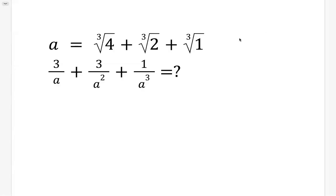Okay, let's see this question. The given condition is A equals these three terms: cubic root of 4, and cubic root of 2, and then cubic root of 1. And of course this one we know is just 1.